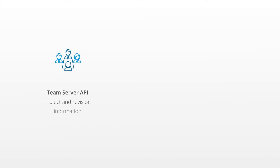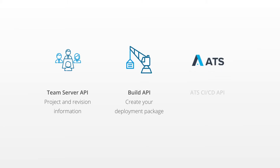For example, you can use the Mendix team server API to access information about your project and revisions, the build API which will build your deployment package, and the automated test suite CICD API which allows you to automate testing.